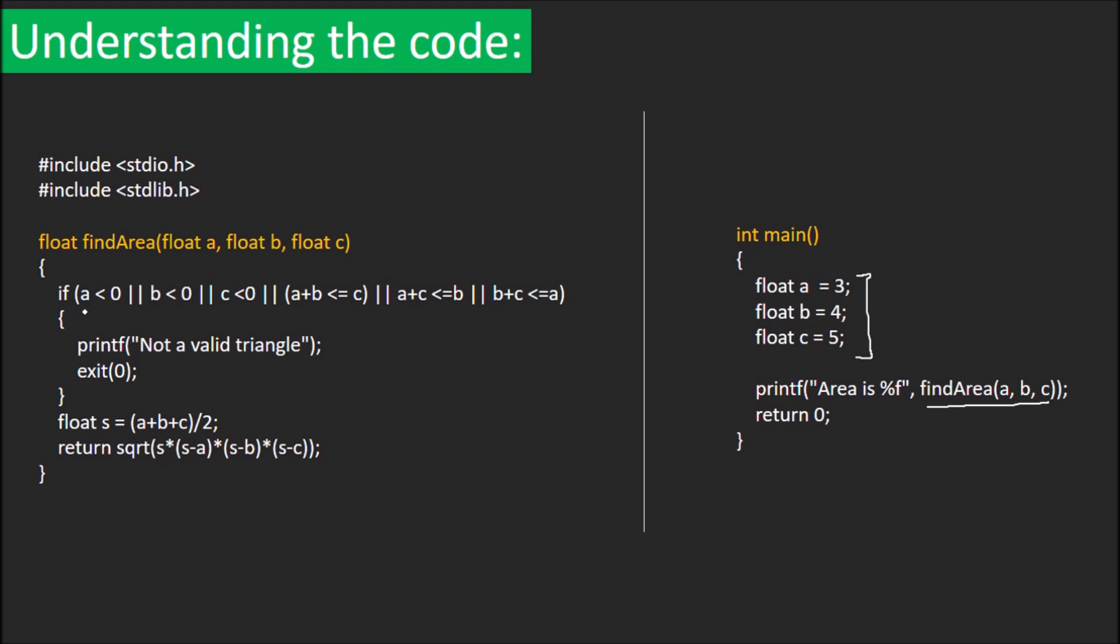A triangle is not valid if any of its sides have a negative length. Also, the sum of 2 sides of a triangle must be greater than the 3rd side. In this if condition, we check for any conditions that might violate the properties of a triangle.